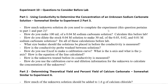How much unknown solution do you need to complete this experiment? For both parts you need 25 milliliters total — five milliliters for part one because you're going to put five mils into 100, and 20 milliliters for part two to mix with 1.6 grams of solid calcium chloride. Next, how do you make 100 milliliters of a 0.04 molar sodium carbonate solution? Make sure you have this calculated before lab.